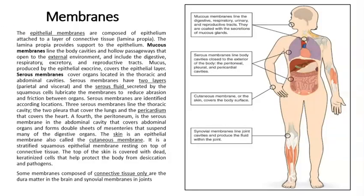Membranes: we have mucous membranes and serous membranes. Serous membranes have two layers — the parietal layer and the visceral layer. In between the two layers, you're going to have a fluid called serous fluid. An example of a serous membrane is the membrane that covers the heart. The particular name for that membrane is the pericardium, and the fluid in that case is called pericardial fluid.